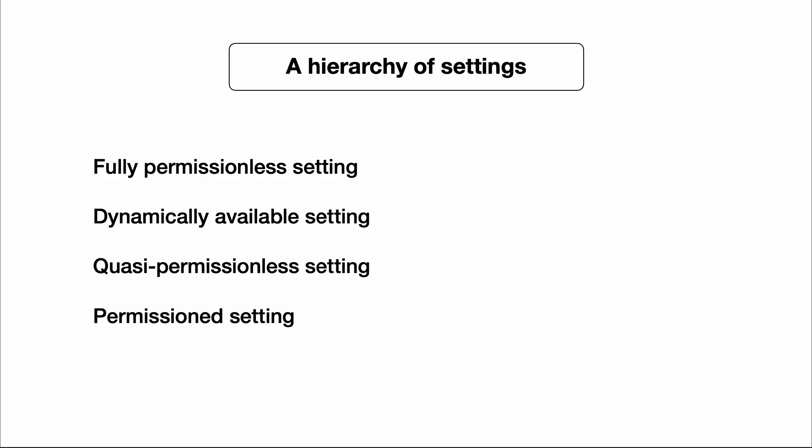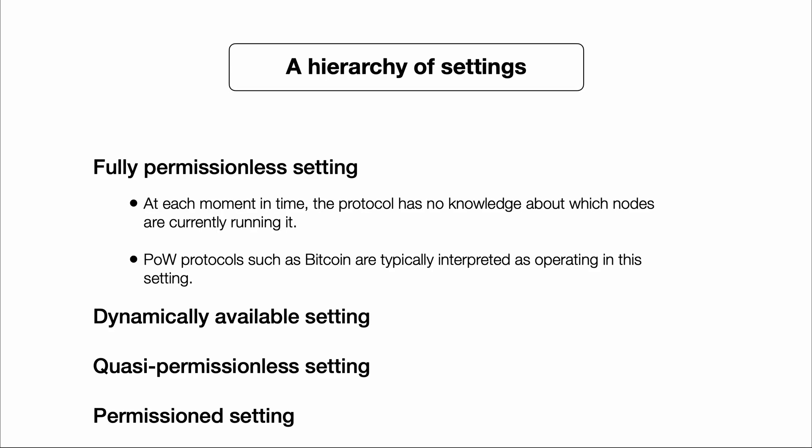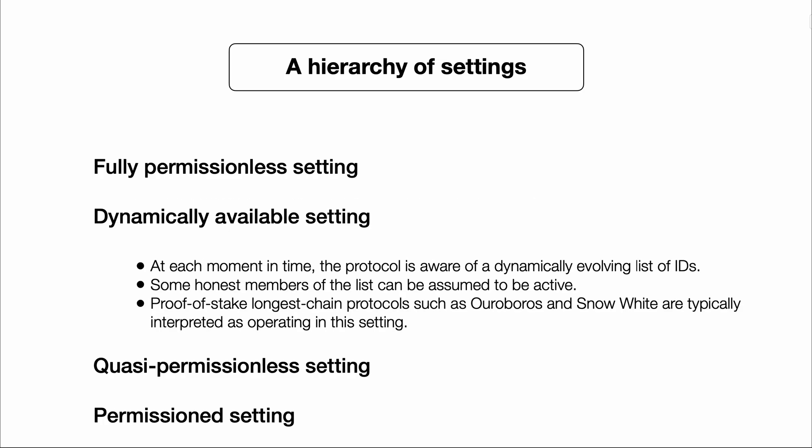I'll define these settings more precisely later on, but let me give a brief overview. Starting with the most permissionless: the hardest setting to operate in is what we call the fully permissionless setting. This is the setting that protocols like Bitcoin operate in. The basic idea is that at each moment in time, the protocol has no knowledge about which nodes are currently running it. In practice you might have a good idea about who the major miners are, but that's not necessary for the protocol to operate effectively.